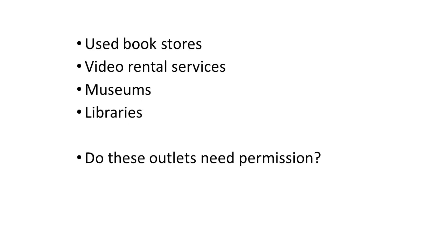We're going to talk about the concept of first sale doctrine. Copyright holders have exclusive rights to distribute copies of their copyrighted work to the public and they have the right to publicly display the work. But we have used bookstores that sell copyrighted books, video rental services that rent movies, museums that display copyrighted works and sculptures, resellers that circulate copies of software, and libraries that lend books. Think also of video game rentals — there are still some folks who rent video games.